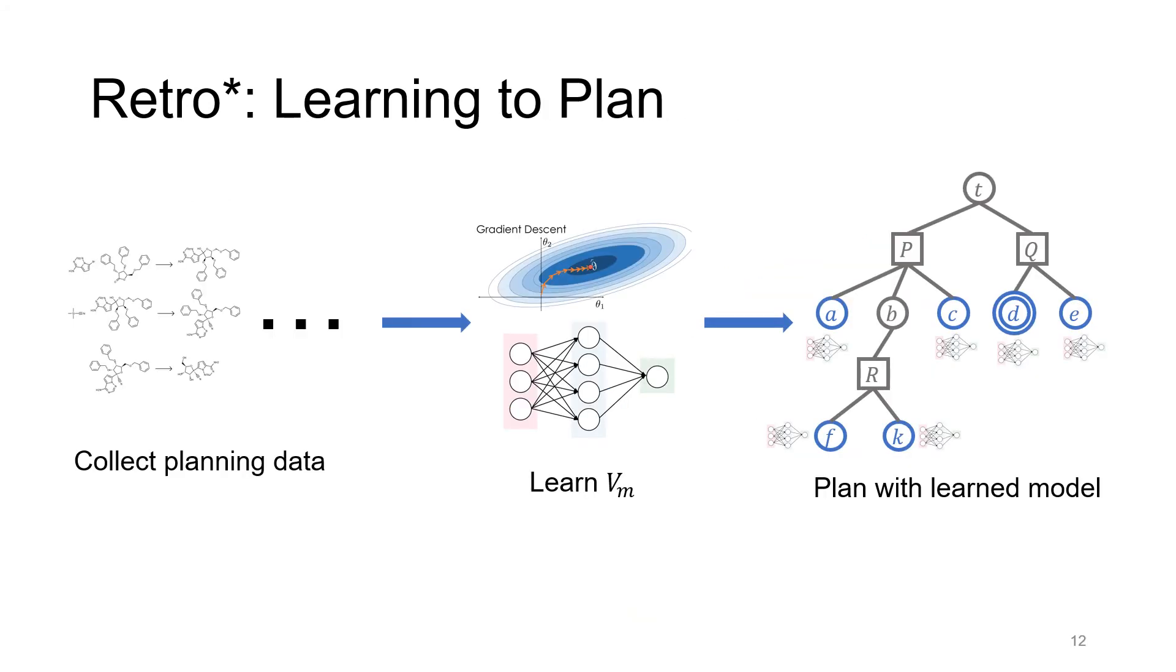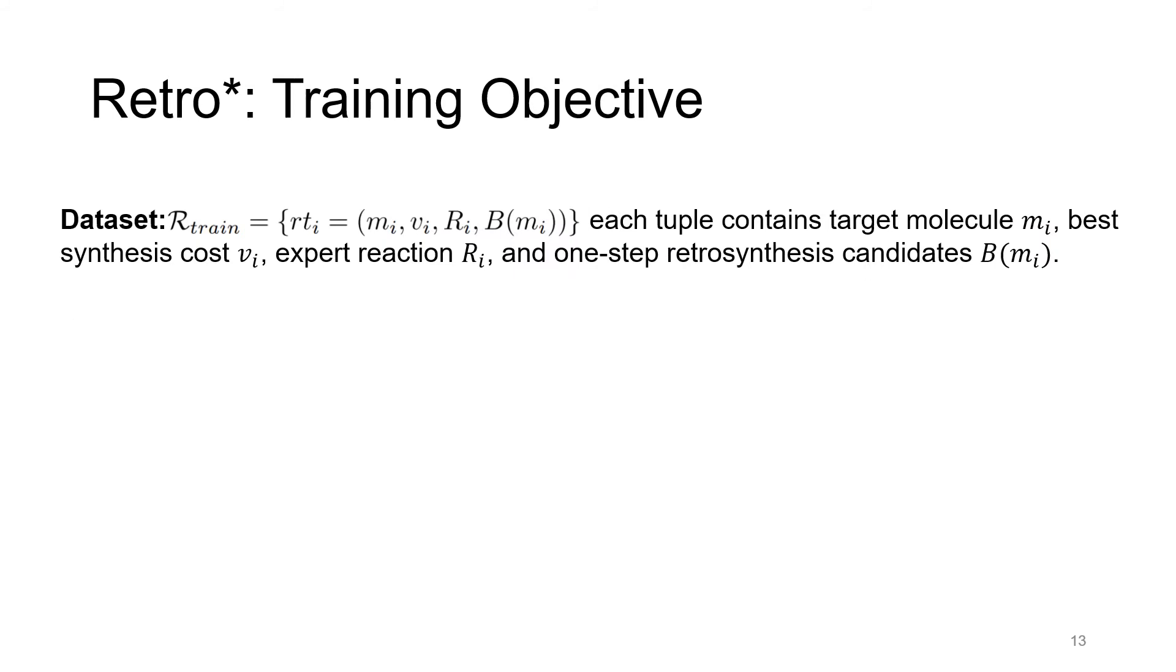We've talked about how to plan with Vm. Next, we'll discuss how to learn Vm from collective planning data. Each data tuple in our training set contains the target molecule Mi, the best synthesis cost Vi, the expert reaction Ri, and the one-step retrosynthesis candidate B(mi). This training set can be either extracted from existing synthesis recipes in chemistry literatures, or by running a non-learned version of RetroStar on a set of target molecules. The best synthesis cost Vi is computed by summing over all the costs of the reactions in the synthesis recipe.